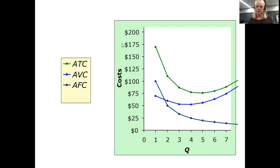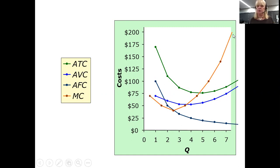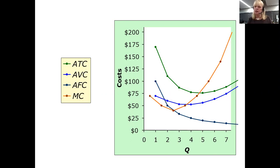The other cost we talked about is marginal cost, seen as the orange J-shaped curve. Marginal cost is change in total cost divided by change in quantity — it tells us the cost of producing one more unit. That marginal cost curve is going to become important in what we talk about today.